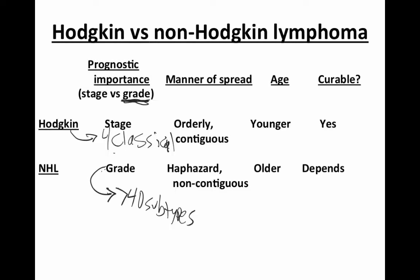The manner of spread also differs. Hodgkin lymphoma is very orderly. Patients will usually have a high neck node or, if it's below the diaphragm, an inguinal node involvement. If they do, the next site of involvement — if it's high neck — will be low neck, then mediastinum and axillary, and then it would spread very orderly to below the diaphragm and then all over. It's very orderly and predictable.